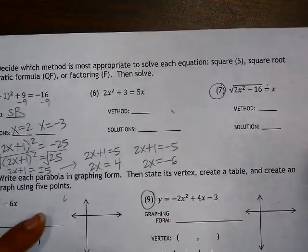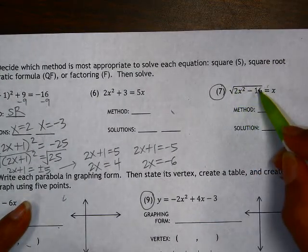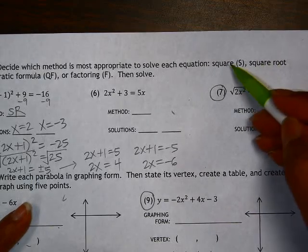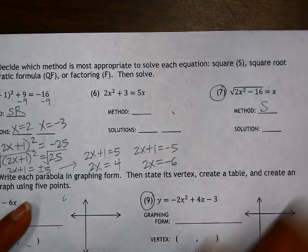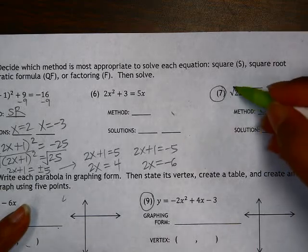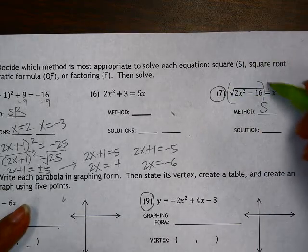Let's go to number 7 now. Here you have a square root in the problem. To undo that, we're going to have to square both sides. So I'm going to say squaring for my method. Here the square root is already isolated. So I'm going to start by squaring it.